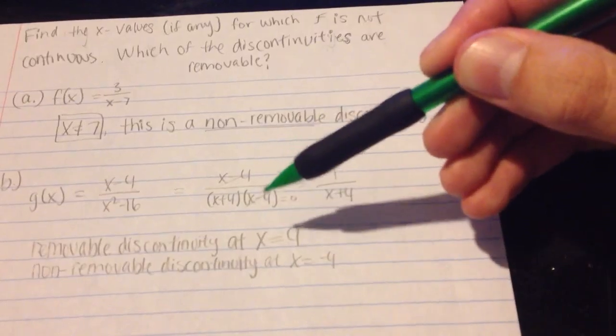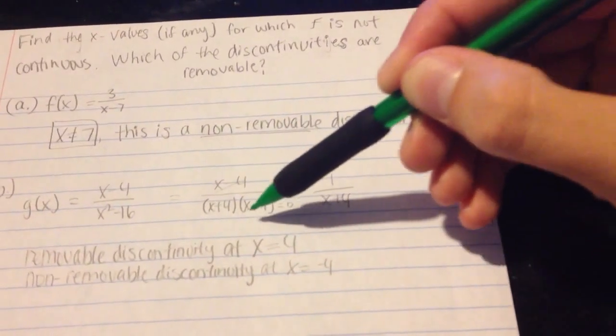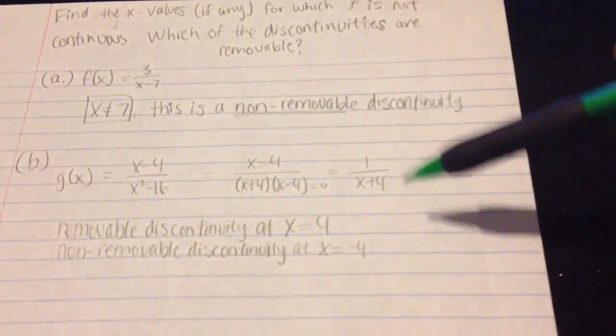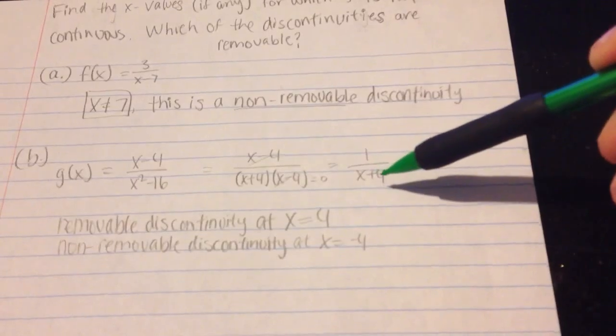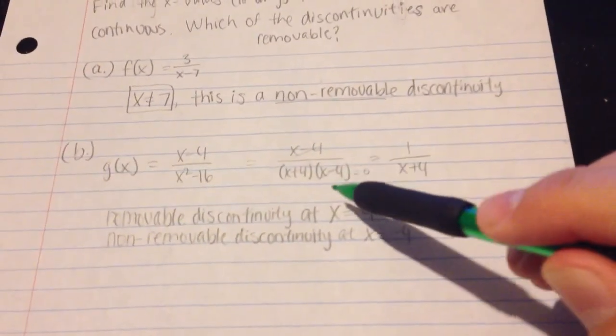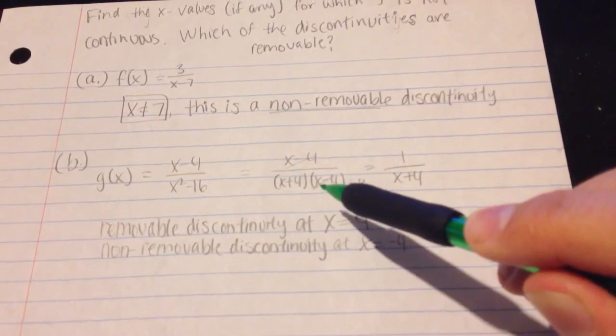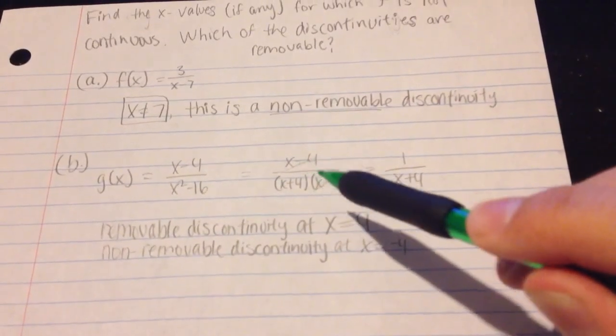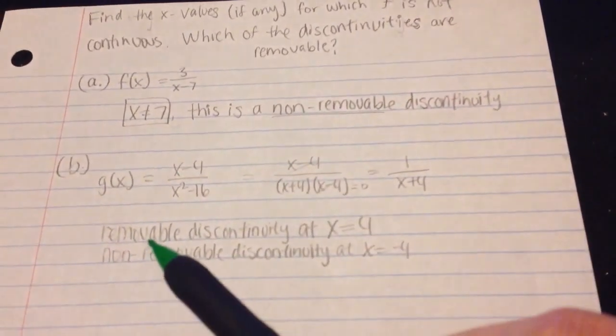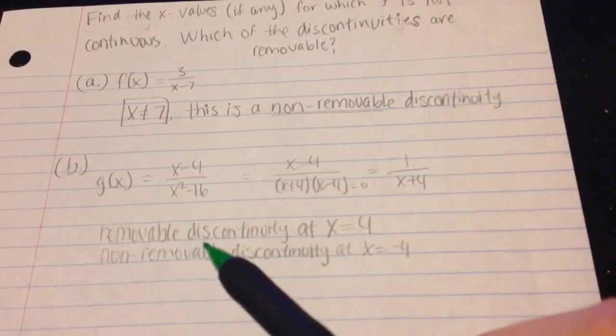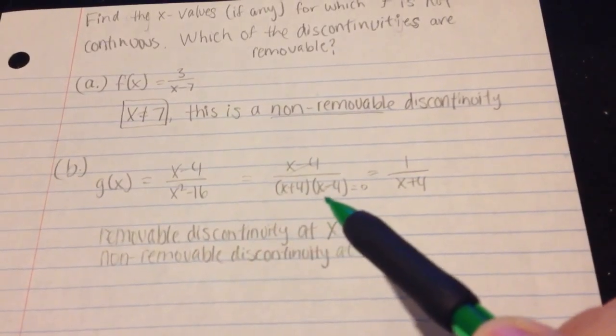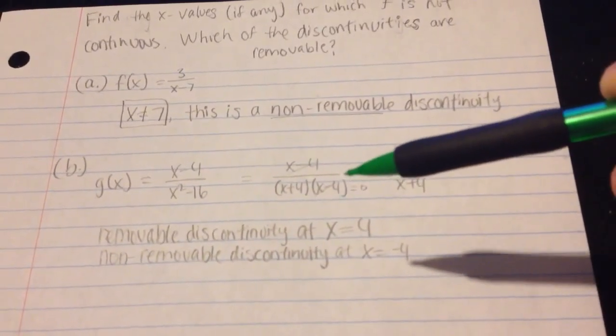And notice that there's a common factor here. So these can cancel out, which I did. And I was left with 1 over x plus 4, meaning that this one right here, if this were to be made 0, you would need a positive 4 right there. So this, the factor that canceled out here, is the removable discontinuity. So positive 4 is removable.